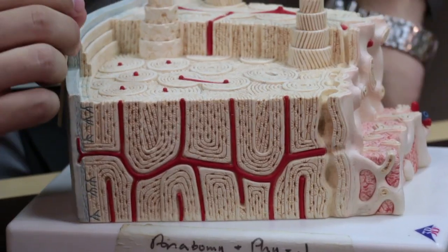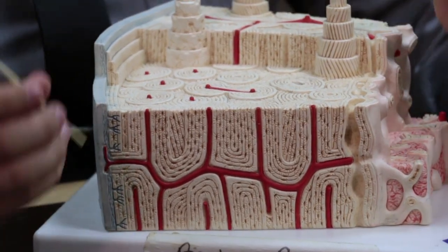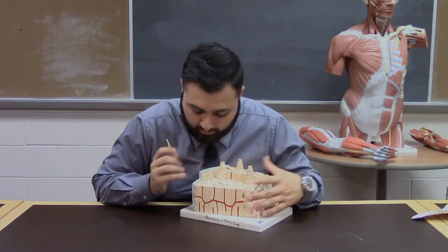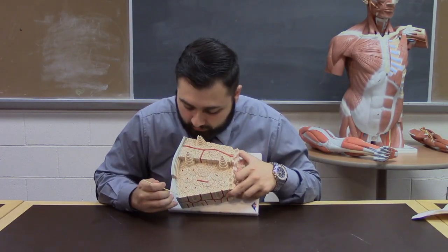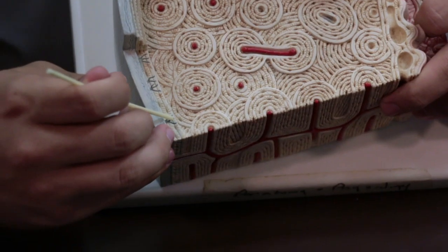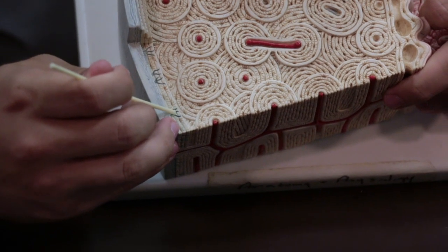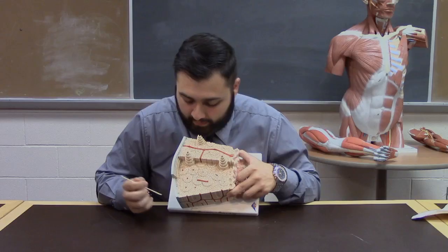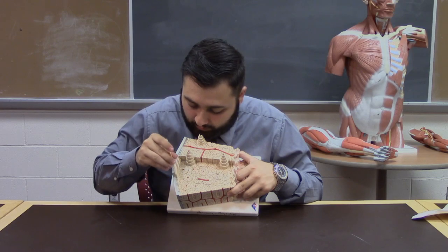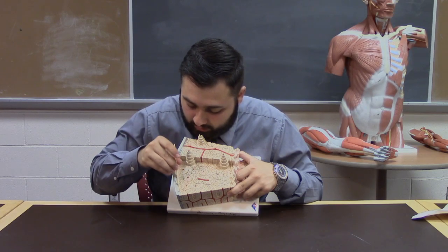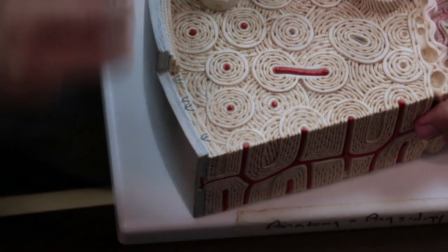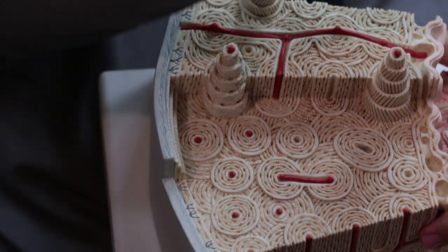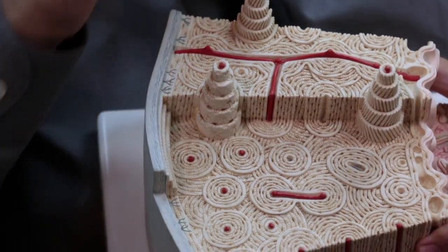The periosteum is right here, on the outside. You have the Sharpey's fibers right there. Those blue little things are the Sharpey's fibers, or the perforating fibers. Outside of that, what they're connecting to is the circumferential lamella. That goes around the whole bone — circumferential lamella.